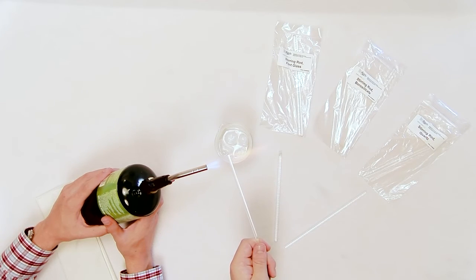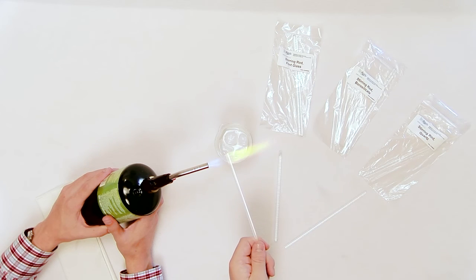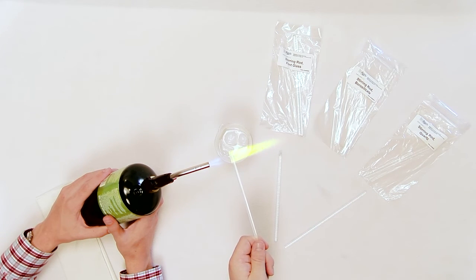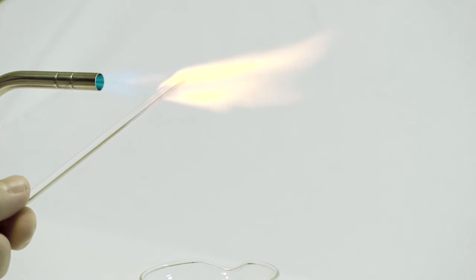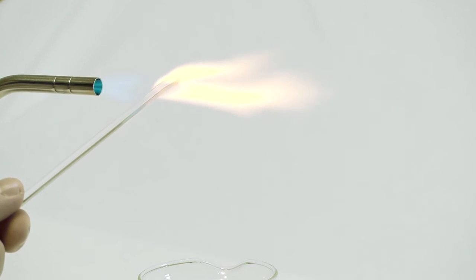Heat one end of the borosilicate glass rod in the flame, keeping about 1 inch of the rod consistently in the flame. Sagging or slumping should be harder to achieve, but the end should fire polish, become smooth or polished.